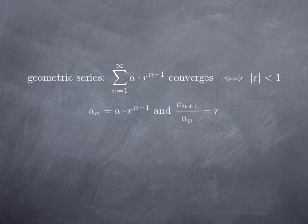This common ratio, by definition, is just the ratio of two consecutive terms, something of the form a_{n+1} over a_n, where a_n is the general term of the series. By definition of the common ratio, this a_{n+1} over a_n, in the case of a geometric series, is a constant r, and we have convergence exactly when this constant is less than 1 in absolute value.